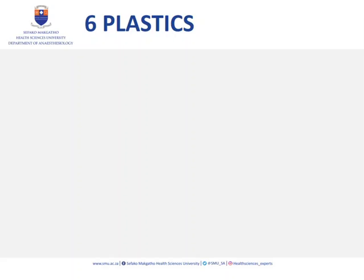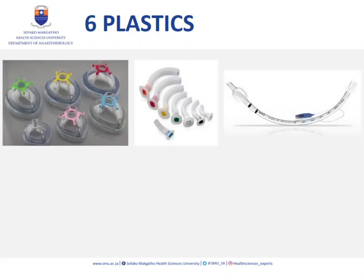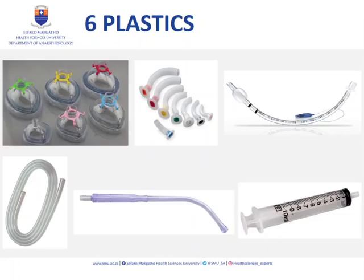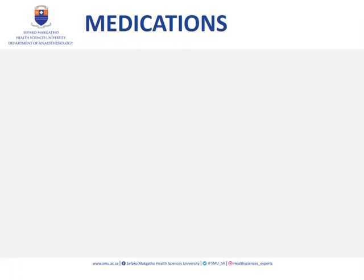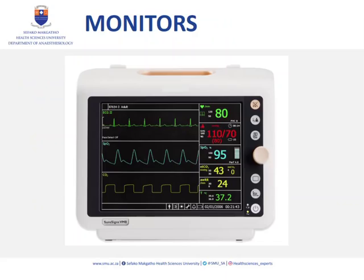For the six plastics, going from the outside in: a face mask of appropriate size, oropharyngeal airways of different sizes, endotracheal tubes of different sizes, a syringe to inflate the cuff of the ET tube, a rigid suction catheter like a Yankauer, and suction tubing with a suction apparatus. For medications, you need something for pre-medication, induction, and paralysis. Also ensure you have a monitor for pulse, blood pressure, and saturation, and ideally a capnograph to confirm intubation.